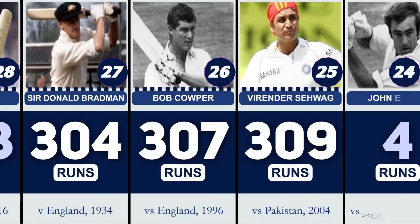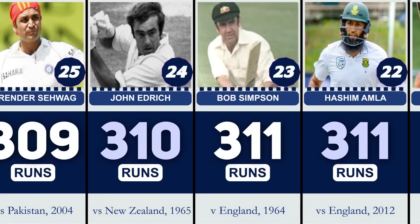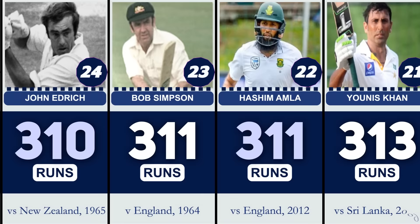Number 25: Virendra Shebak, 309 vs. Pakistan. Number 24: John Idris, 310 vs. New Zealand. Number 23: Bob Simpson, 311 vs. England. Number 22: Hashim Amla, 311 not out vs. England.